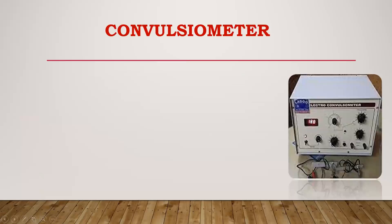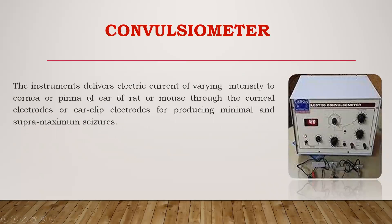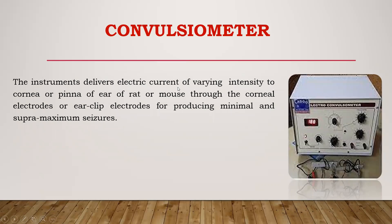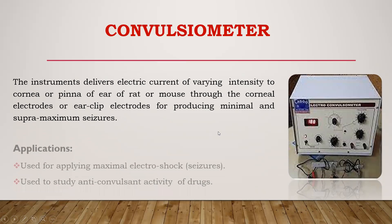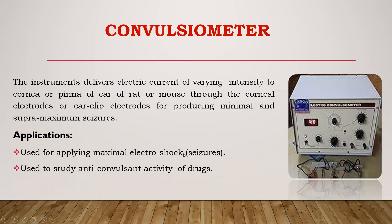Next is the convulsometer, also called the electroconvulsometer. This instrument delivers electric current of varying intensity to the cornea or pinna of the ear of the rat or mouse. The instrument is designed to supply electric current of various intensities via ear clips placed into the ear pinna of the rat, producing minimal and supra-maximal seizures. These are used for applying maximum electroshock seizures to the animal and to study the anticonvulsant activity of a drug.